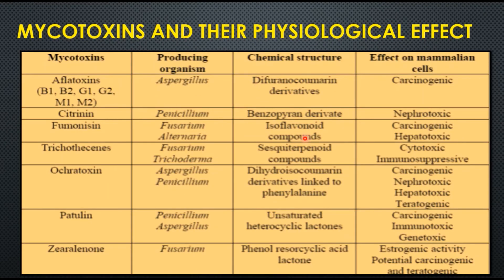Regarding specific physiological effects: aflatoxin is carcinogenic; citrinin is nephrotoxic (affects the nervous/kidney system); fumonisins are carcinogenic and hepatotoxic; trichothecenes are cytotoxic and immunosuppressive. Ochratoxin effects depend on the producing organism — Aspergillus produces carcinogenic effects, while Penicillium produces nephrotoxic, hepatotoxic, or teratogenic effects. Patulin is carcinogenic, immunotoxic, and genotoxic. Zearalenone has estrogenic activity, and is potentially carcinogenic and teratogenic.